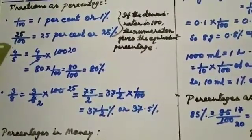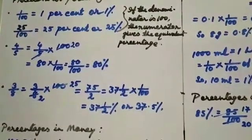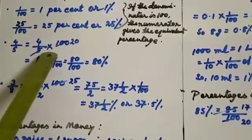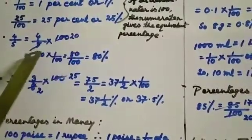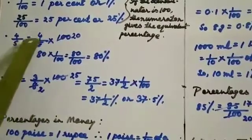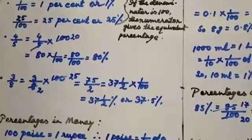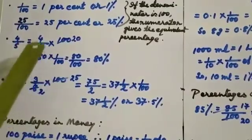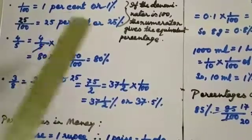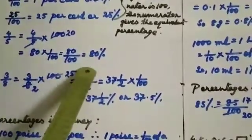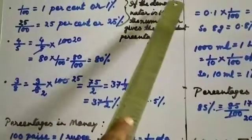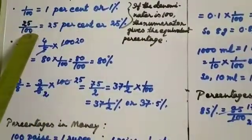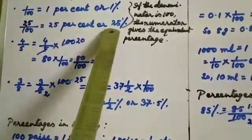Now if you get a fraction like 4 by 5, how will we convert it into a percentage? You will do it this way: 4 by 5 multiplied by 100. Do cross multiplication — 5 and 20 give 100, and 4 and 20 give 80. Now this 80, multiply with 1 by 100 to show it as percentage — so 80 by 100 equals 80 percent. That means if the denominator is 100, the numerator gives the equivalent percentage.